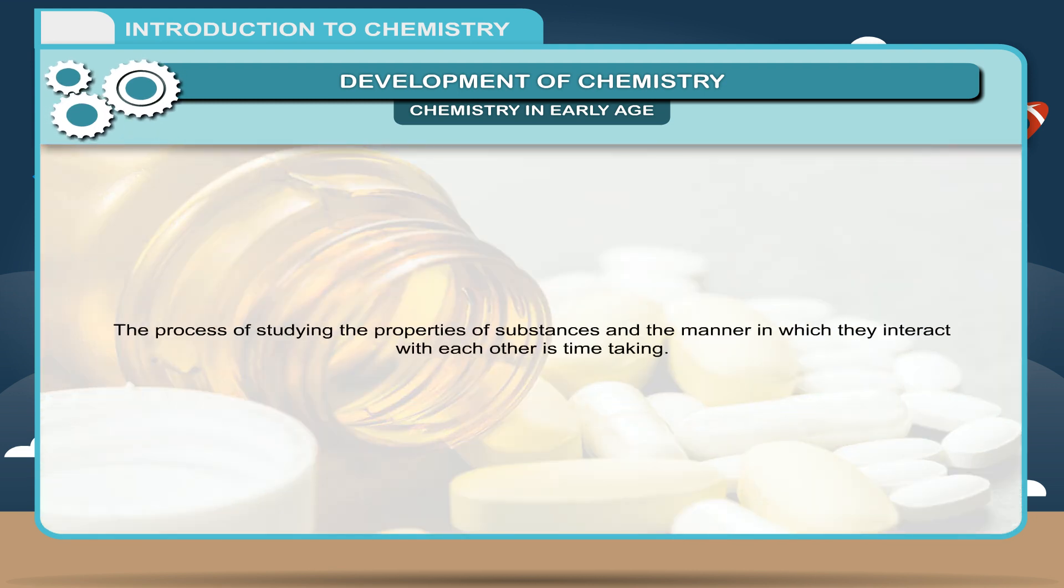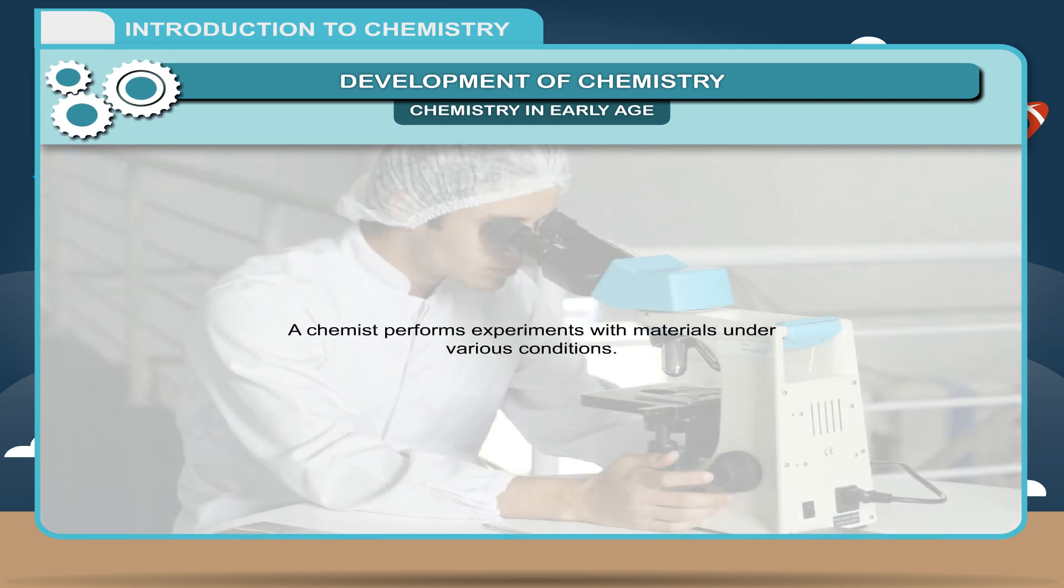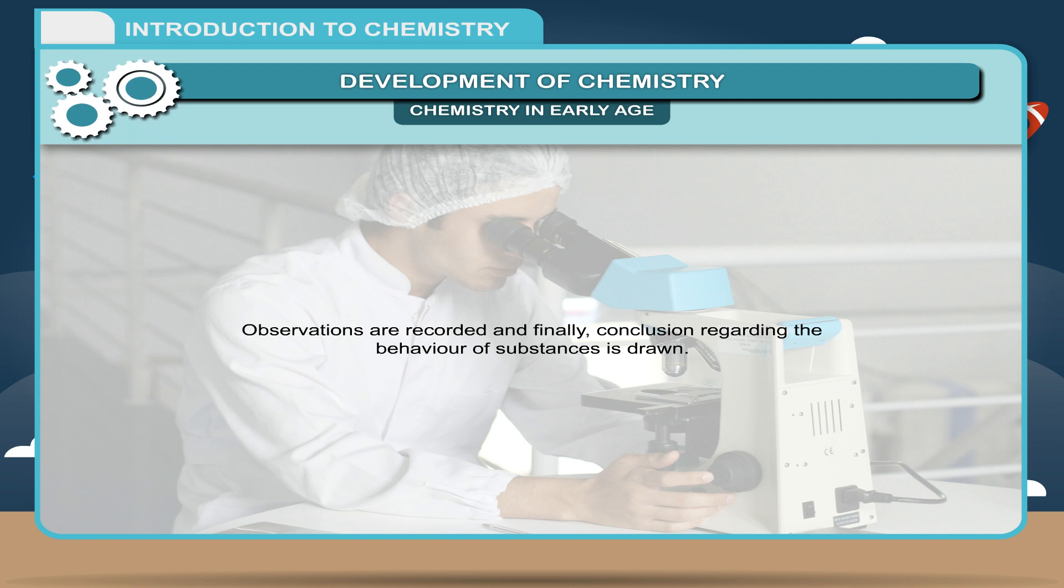The process of studying the properties of substances and the manner in which they interact with each other is time-taking. A chemist performs experiments with materials under various conditions. Observations are recorded and finally, conclusions regarding the behavior of substances are drawn. Discovery of new substances takes place in this manner.